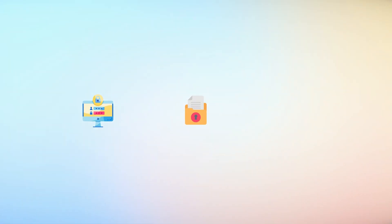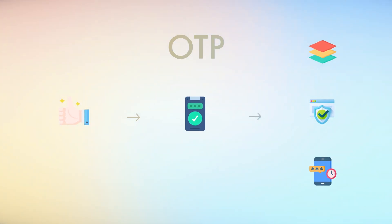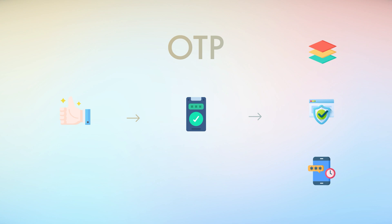Today, online security is of absolute importance to protect sensitive information and prevent unauthorized access to accounts. One effective method that you see everywhere is the use of Authenticator apps, which provide an additional layer of security through the generation of time-sensitive one-time passwords (OTPs). Let's uncover how Authenticator apps work and their role in protecting your online valuables.